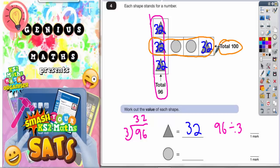We've got two triangles in this row, which is going to be 32 plus 32. 2 plus 2 is 4, 3 plus 3 is 6. So these two triangles together make 64. If we then subtract 64 from 100, which you can probably do in your head, it comes to 36.